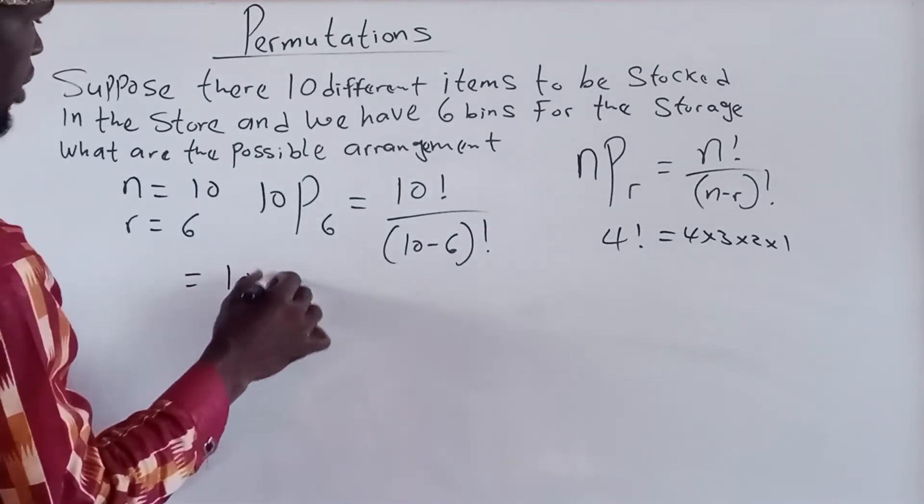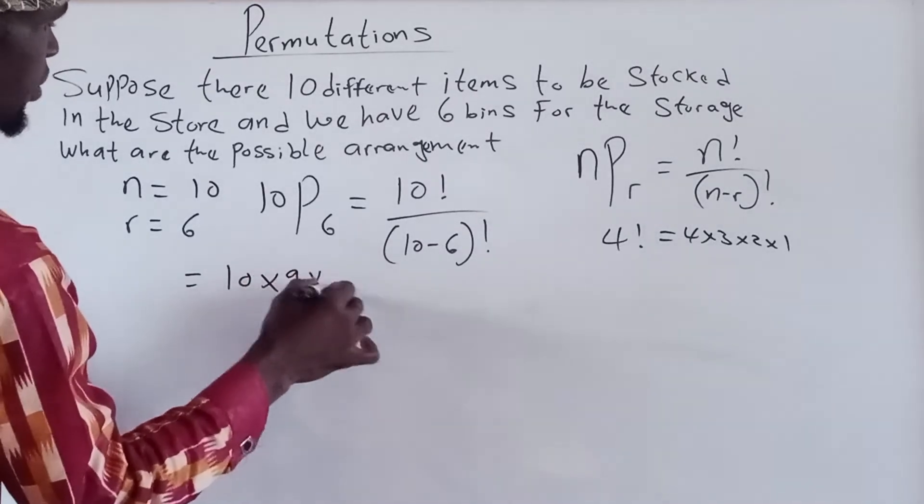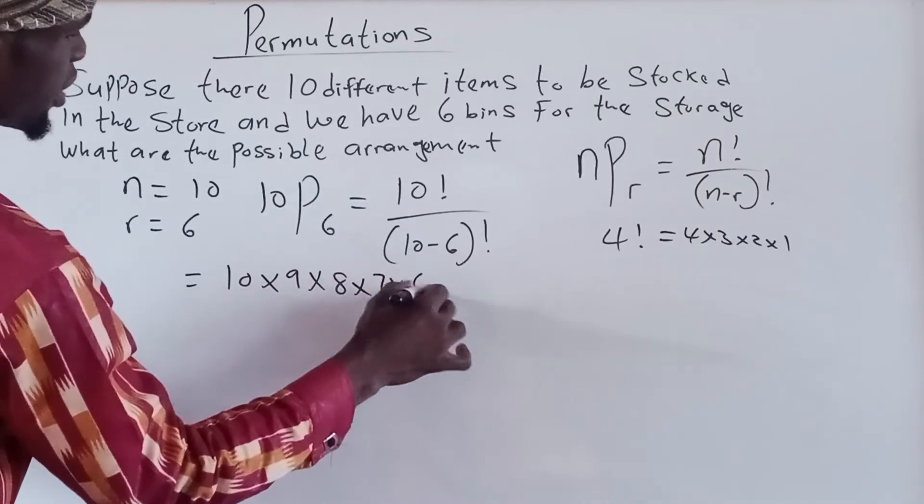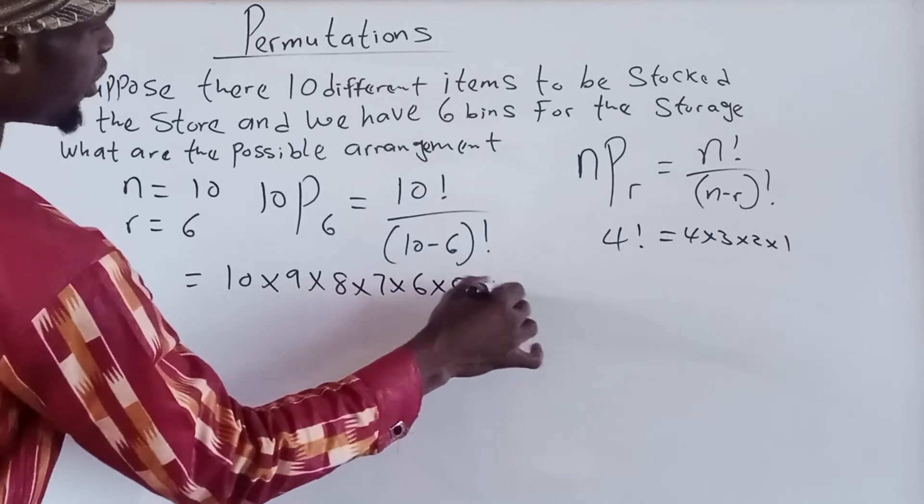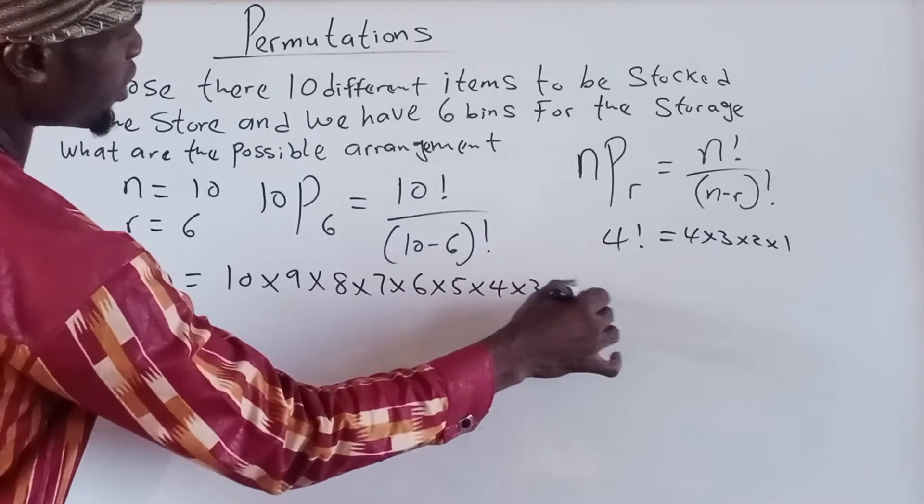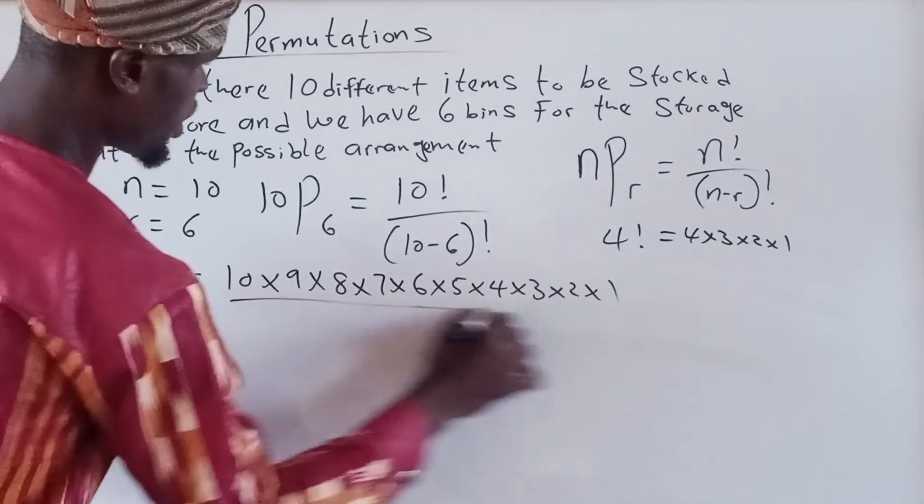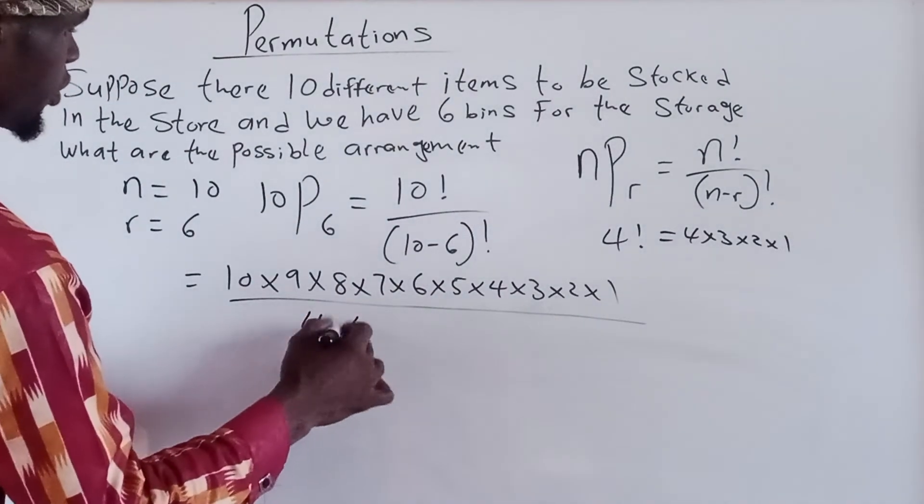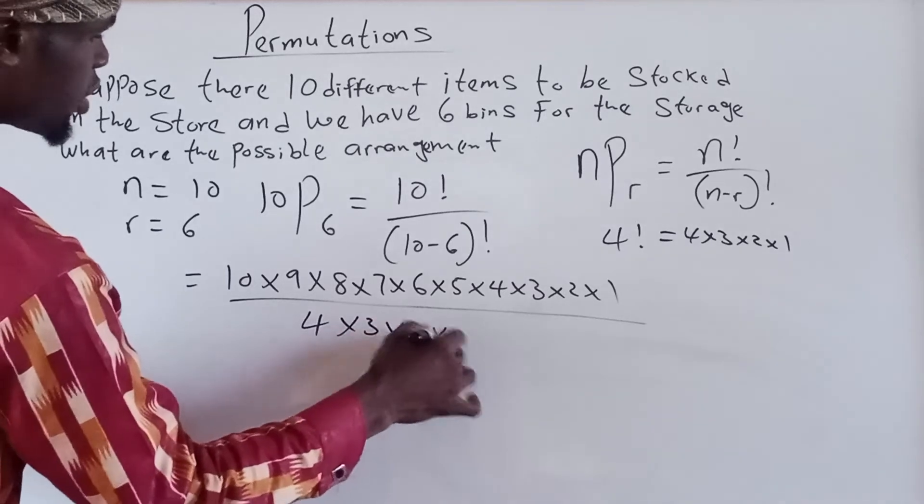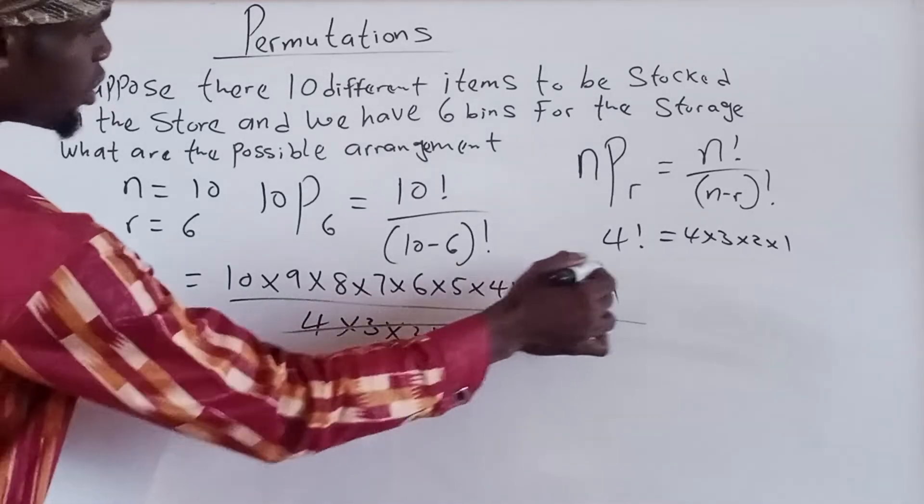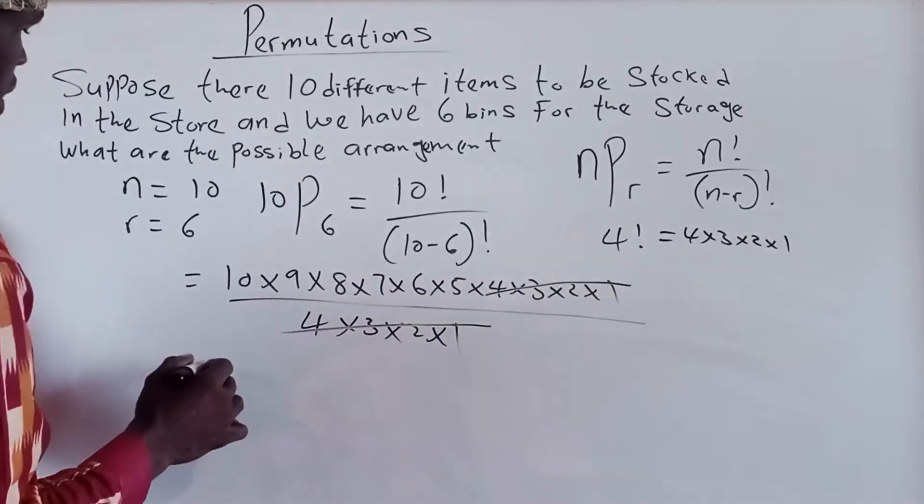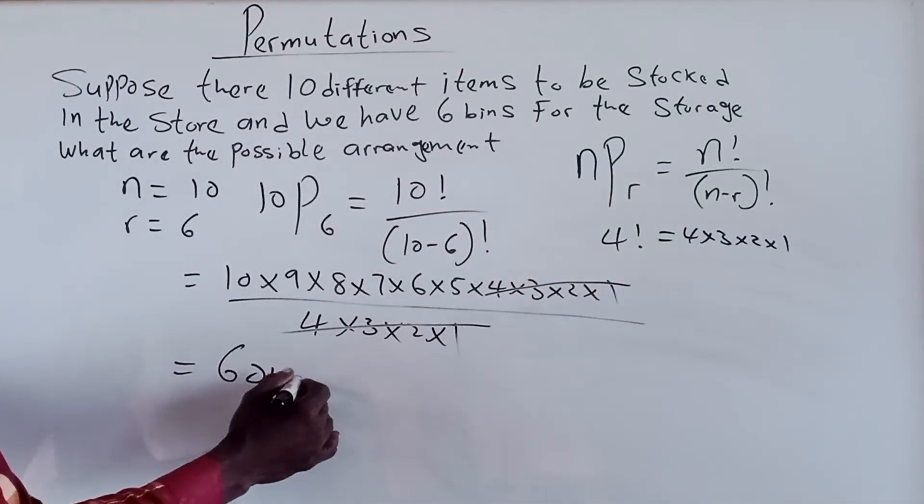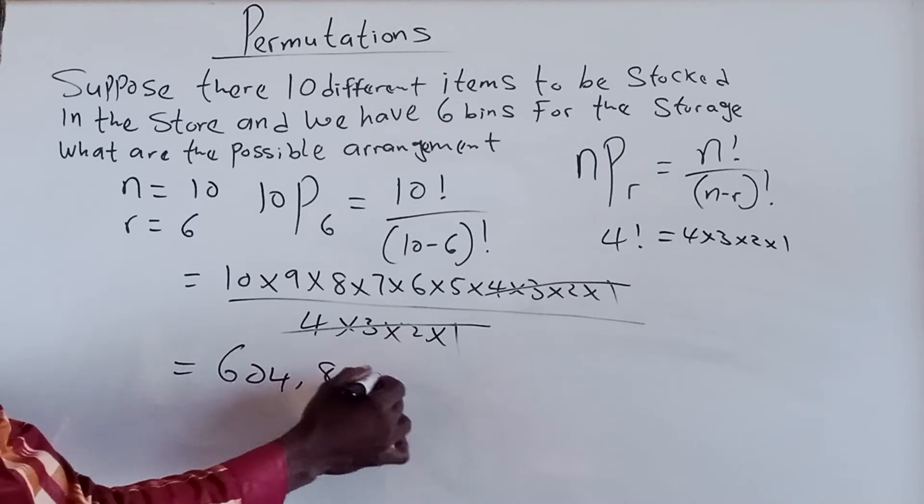So this one now equals 10 multiply by 9 multiply by 8 multiply by 7 multiply by 6 multiply by 5. After simplification, this becomes 604,800 ways.